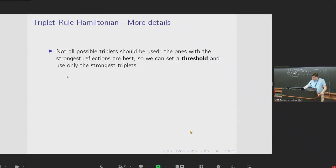That was an overview of how the Hamiltonian is constructed, but there are some more details that are worth mentioning. It's the case that not all possible triplets should be used. As I said before, those triplets with the strongest reflections are the best ones to use, as these are the ones for which the triplet rule should be best satisfied. So we can set a threshold and use only the strongest triplets. In fact, it's choosing which triplets to use based on these reflection strengths that is unique to the particular structure. Without this, we wouldn't actually be using the diffraction data in constructing the Hamiltonian. The values don't explicitly appear in the relation I presented.